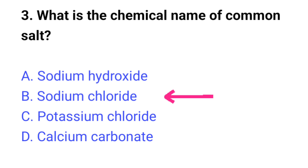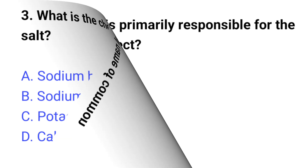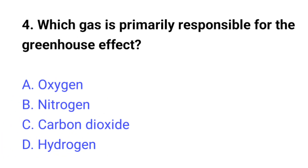Question number three: what is the chemical name of common salt? The right answer is option B, sodium chloride. Question number four: which gas is primarily responsible for the greenhouse effect? The right answer is option C, carbon dioxide.